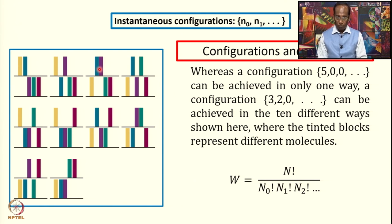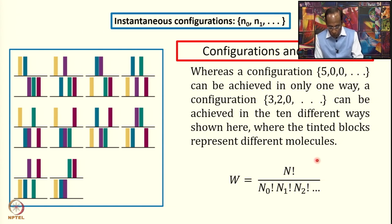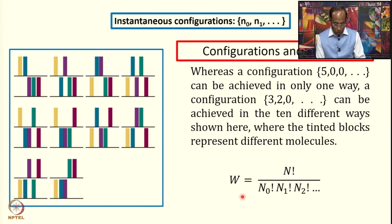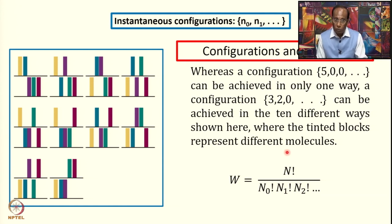We need to find the number of distinguishable ways of achieving a configuration. A formula, which we will shortly derive, gives the weight W of a configuration as N factorial divided by N0 factorial times N1 factorial times N2 factorial, and so on. Here N is the total number of molecules, and N0, N1, N2 come from the instantaneous configuration.